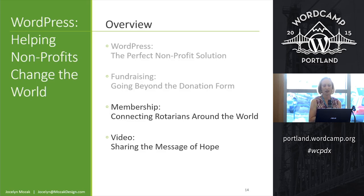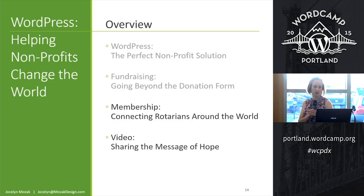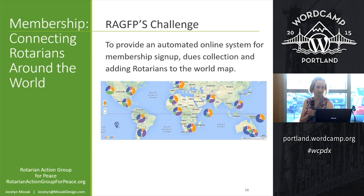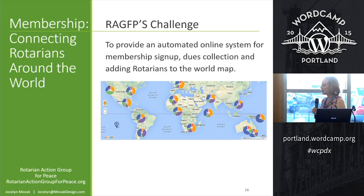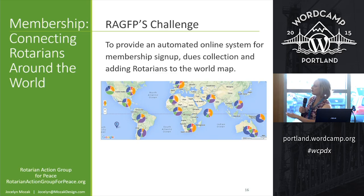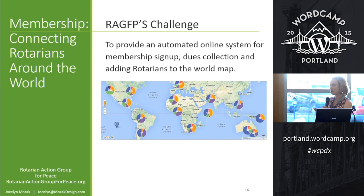The next nonprofit I wanted to chat about is the Rotarian Group, and this is about membership — a method for connecting Rotarians around the world with the common goal of peace. What they wanted was a system where people could pay their membership dues, be entered into the system, be put on a map, and then find Rotarians local to them through that map to find like-minded people.